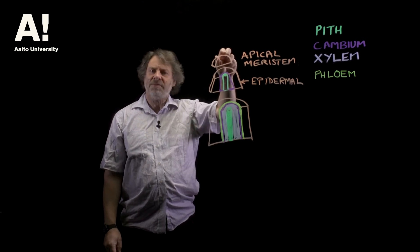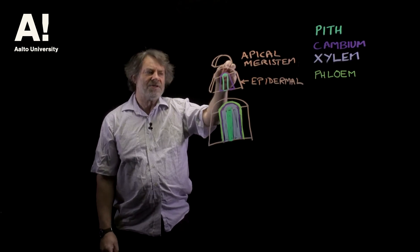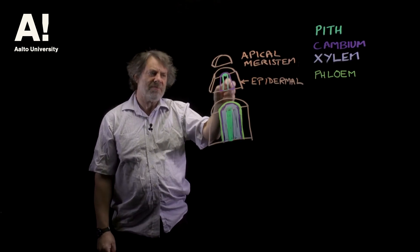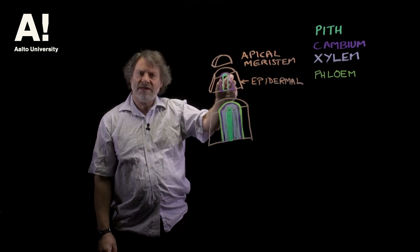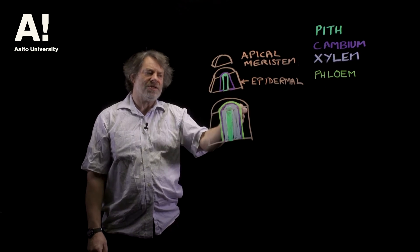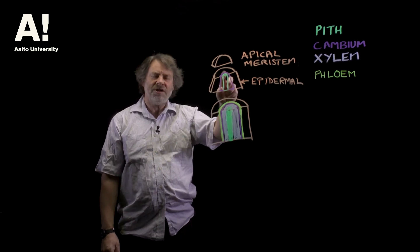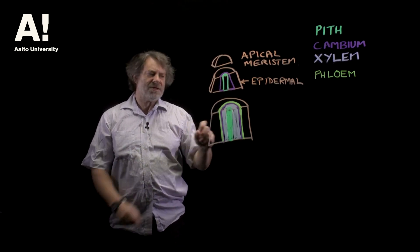The apical meristem is the place where cells are formed initially and then we have this differentiation beginning to take place. So the first thing that gets formed is the pith and what's called a procambium, and it's really the cambial layer where cell formation and differentiation takes place proper. So the pith is laid down by the growth of the apical meristem.